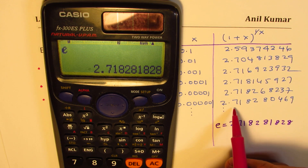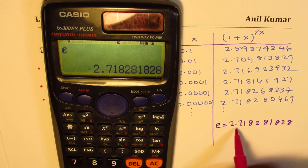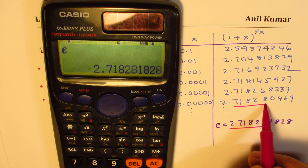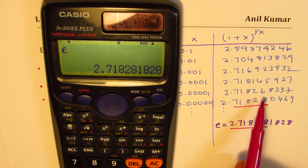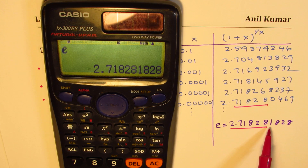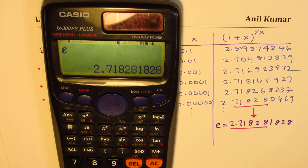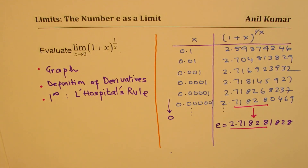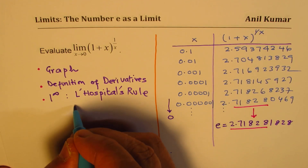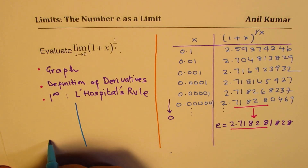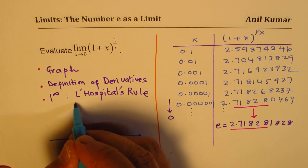We have matched up to this point. The trend is that the value is increasing, so it might just approach e. What you really see is that the process clearly indicates that as we approach 0, the function 1 plus x to the power of 1 over x approaches e.